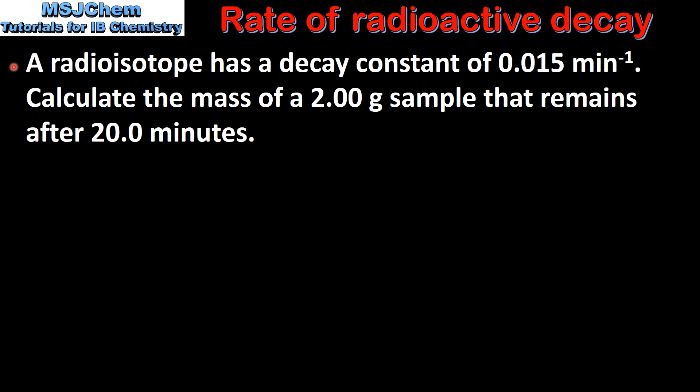Next we look at an example. A radioisotope has a decay constant of 0.015 minutes to the negative 1. Calculate the mass of a 2 gram sample that remains after 20 minutes.